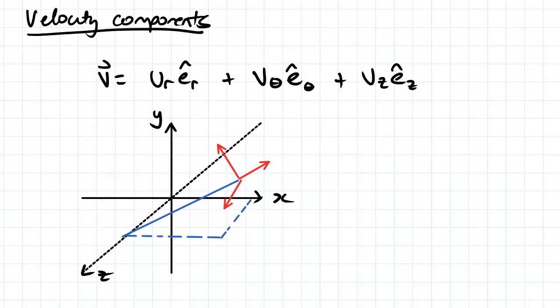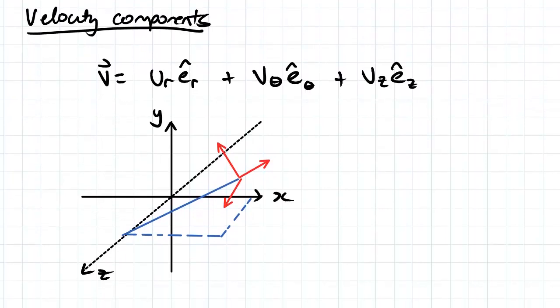So from that, we get what's called velocity components. So we've got our angle theta in here, and then the velocity components of our total velocity v is vr, vtheta, and vz.